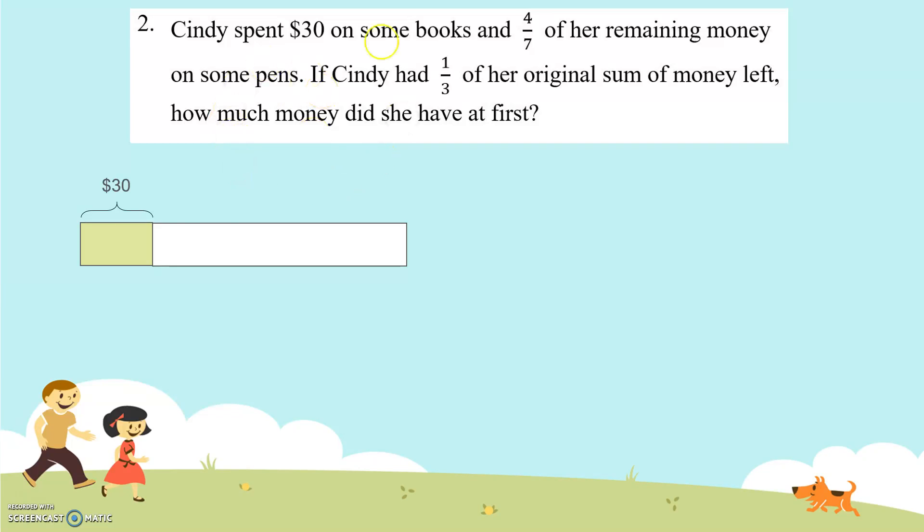Now she spent 4/7 of this remaining money on some pens, so we need to cut them into seven. And then out of these seven units, she spent four units because 4/7. So 4/7 are spent on pens.